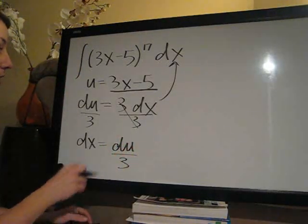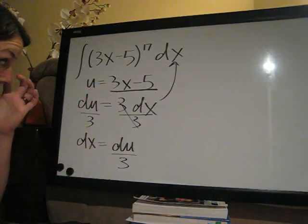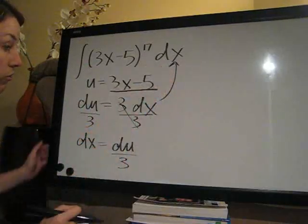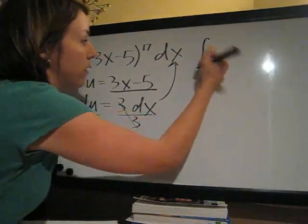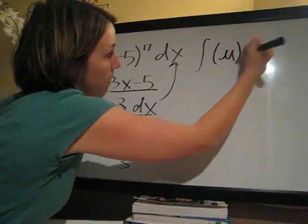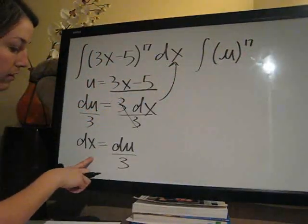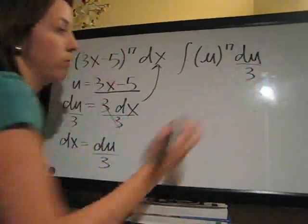So now we can plug in for u and we can plug in for dx. We're going to basically change all of these x's to u's. So the way that we do that is go back to the integral here and we say u to the 17, and then dx we solved down here, du over 3.